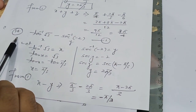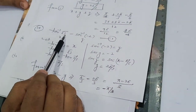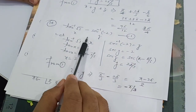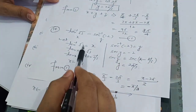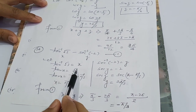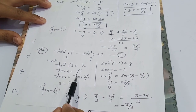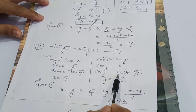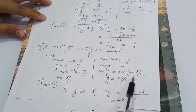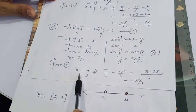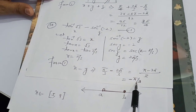Similarly for question number 14, we evaluate tan⁻¹(√3) - sec⁻¹(-2). Let tan⁻¹(√3) = x, so tan x = √3 = tan(π/3), giving x = π/3. For sec⁻¹(-2) = y, sec y = -2, which lies in the second quadrant giving y = π - π/3 = 2π/3. Therefore x - y = π/3 - 2π/3 = -π/3.